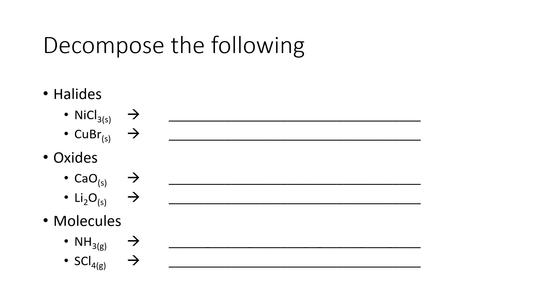Let's break down some halides, oxides, and molecules. Nickel chloride, you're going to end up with nickel and chlorine gas. We'll make sure we balance this out with a three here and a two here, and that needs to be a two.